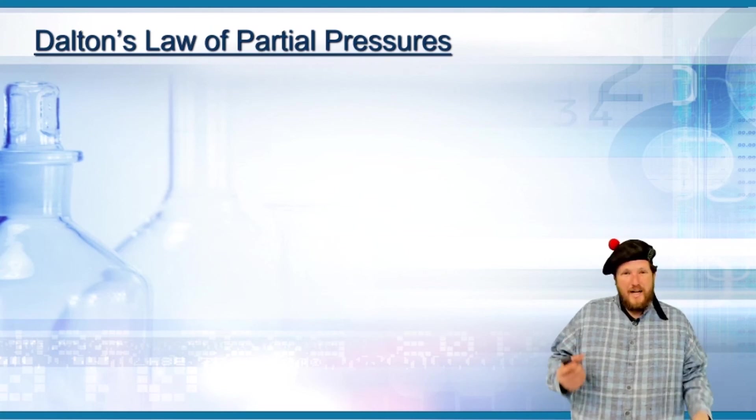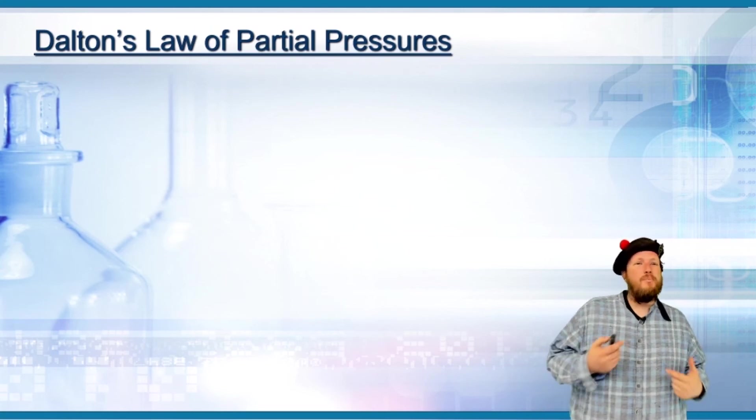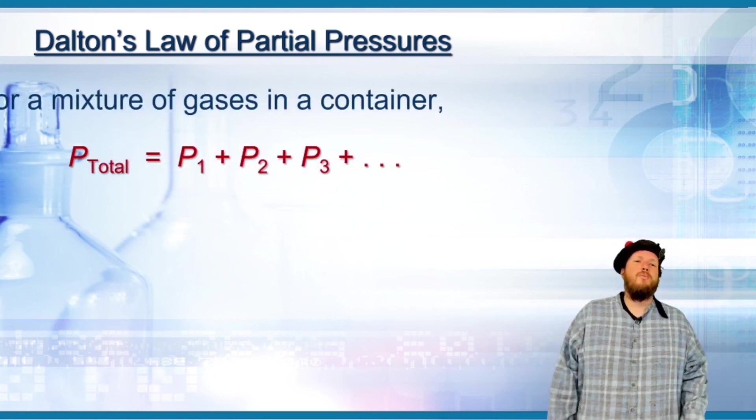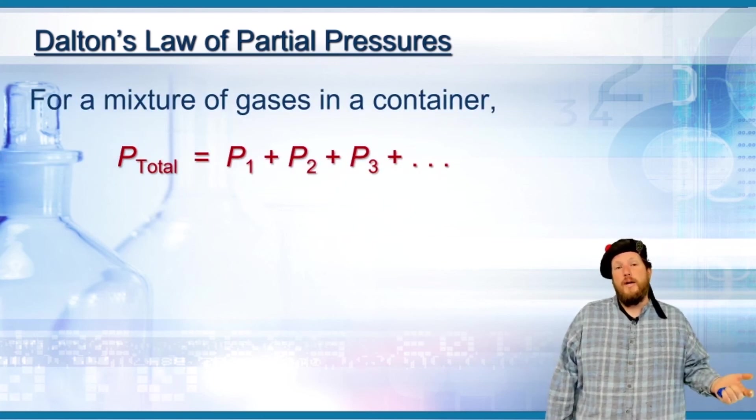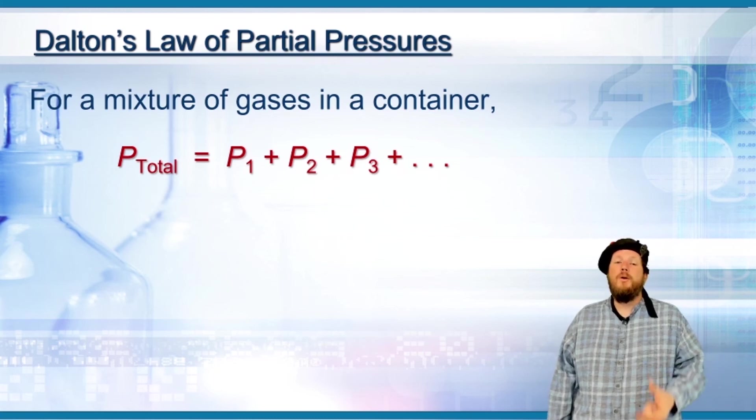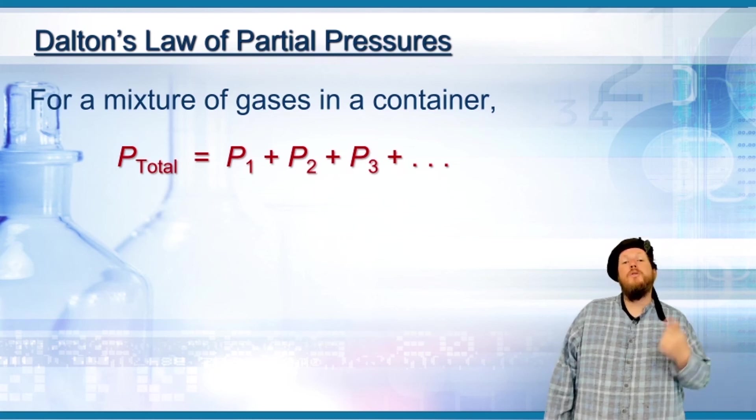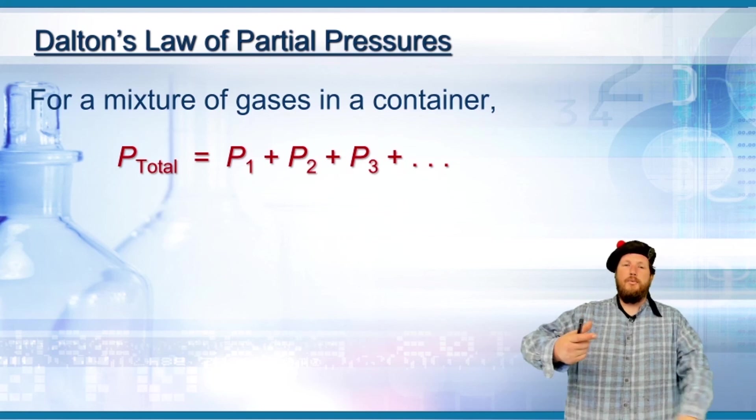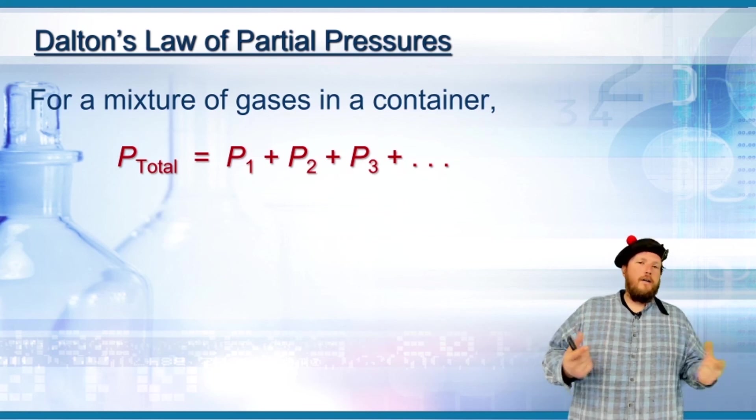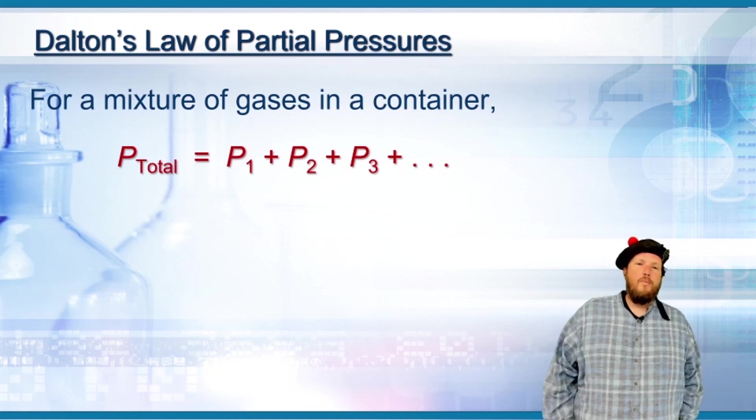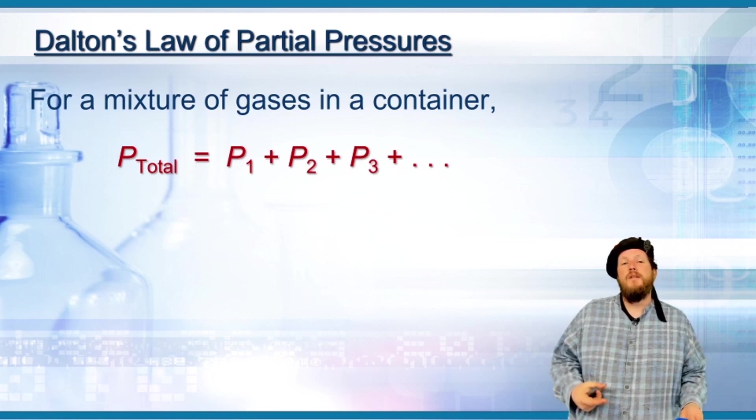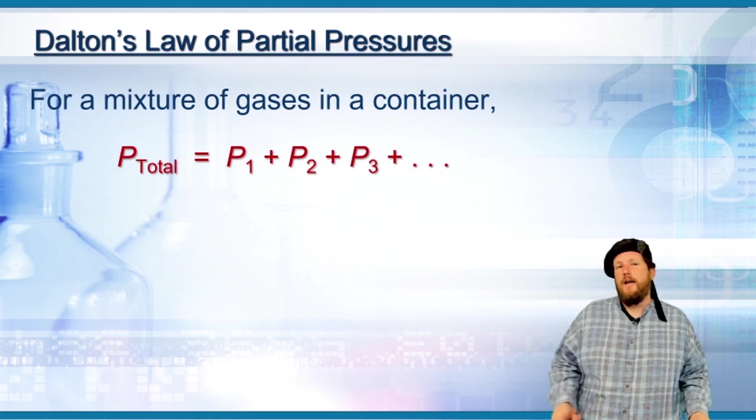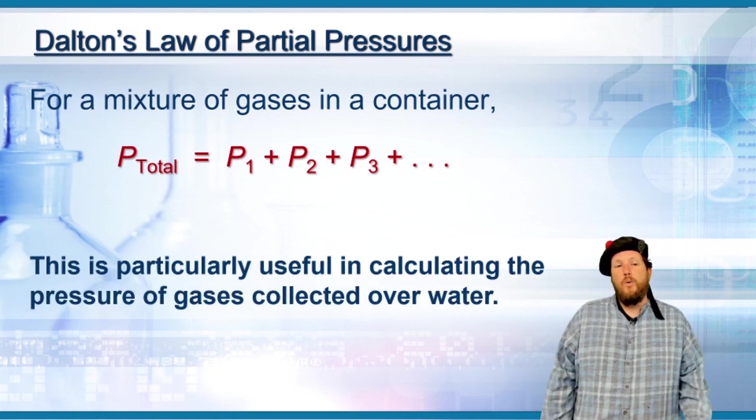There's another law which isn't a proportionality law, but it relates to just pressures. It's Dalton's law of partial pressures. It says that for a mixture of gases in a container, the total pressure is equal to the sum of the partial pressures. This is like the pressure of oxygen, the pressure of nitrogen, the pressure from argon. All combined together will give you the total pressure, which totally makes sense that if you have partial pressures of different substances in a container together that you just add up those pressures to get the final total.